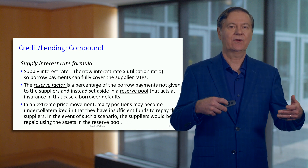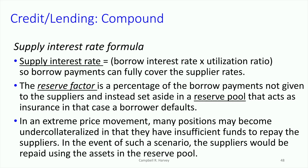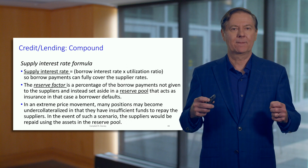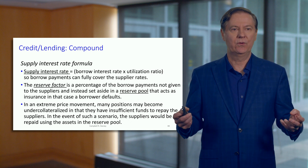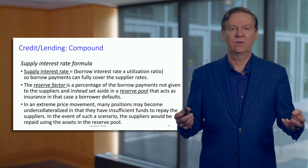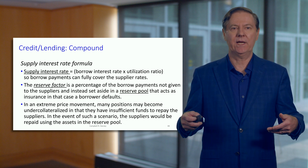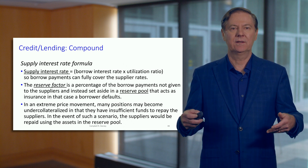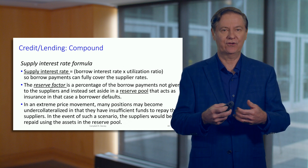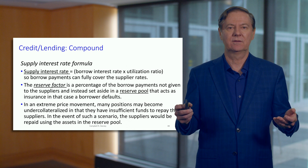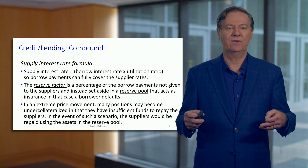On the other side, you've got the suppliers of liquidity, and there's a supplier interest rate. That rate is going to be the borrow rate times the utilization ratio. If nobody is borrowing, there's no revenue, so there's nothing to pay out in supply interest. If 50% of the money is borrowed, you collect the interest on that and distribute it among all suppliers — that's where the utilization ratio comes into play.